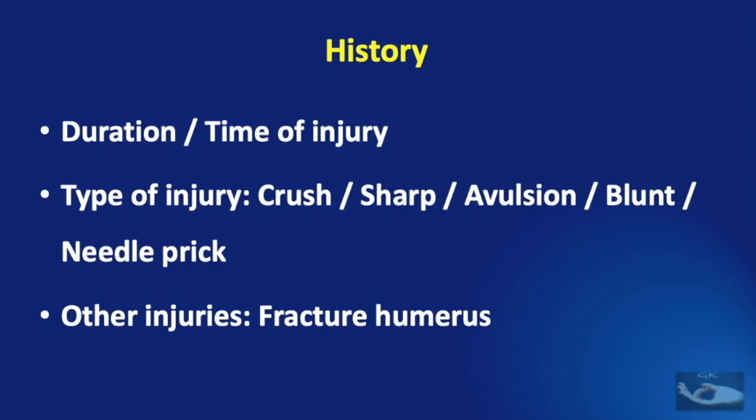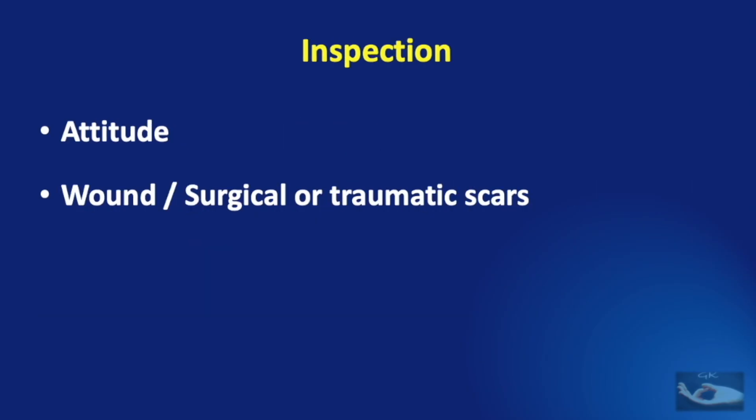If there has been a fracture of the humerus, we need to find out whether the patient noticed any weakness of the fingers at the time of injury, what treatment was given for the fracture humerus, and when the patient noted the deficit in their hand. As far as inspection in radial nerve injury is concerned, we need to examine two things: the attitude of the limb, and the presence of a wound or surgical or traumatic scars.